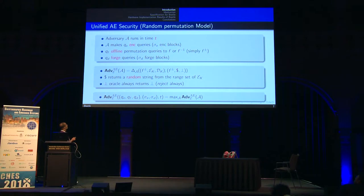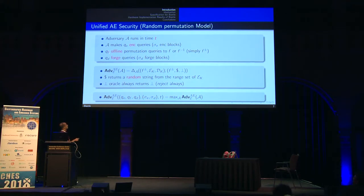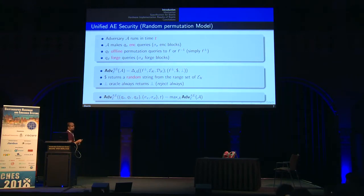In this model, the adversary runs in time t. The adversary makes Q_E encryption queries with a total of σ_E encryption blocks, Q_D forging attempts with σ_D forged blocks to the decryption oracle, and additionally gets access to one public random permutation F, querying F or F-inverse, bounded by Q_F — we call this oracle F±. In the real world, the adversary gets the F± oracle, encryption oracle, and decryption oracle. In the ideal world, it gets a random oracle and a rejection oracle. The advantage is parameterized by Q_E, Q_F, Q_D, σ_E, σ_D, and time t, taken as a maximum over all adversaries.